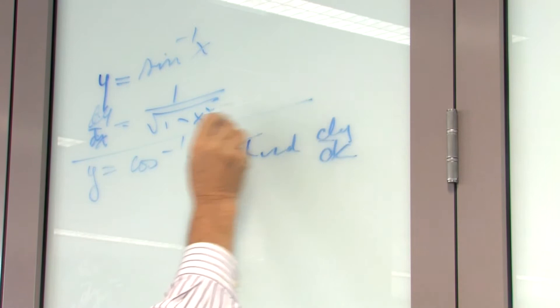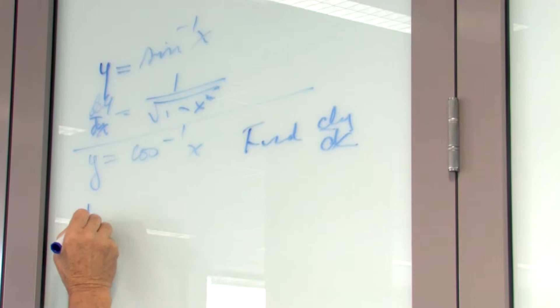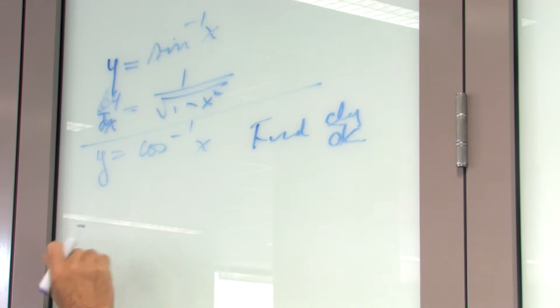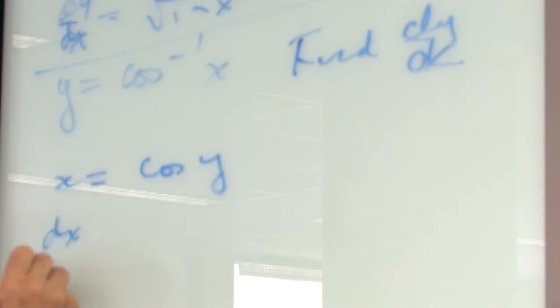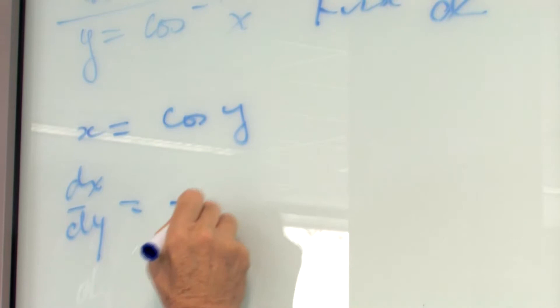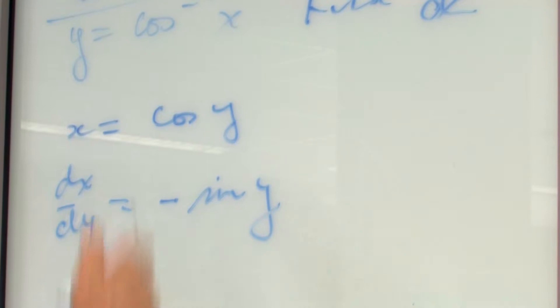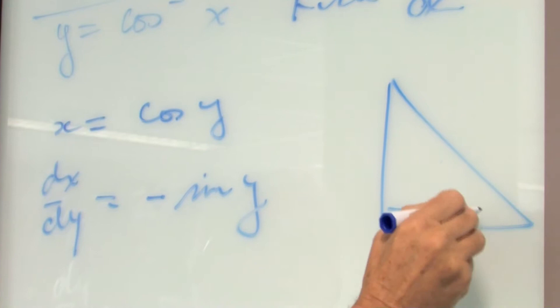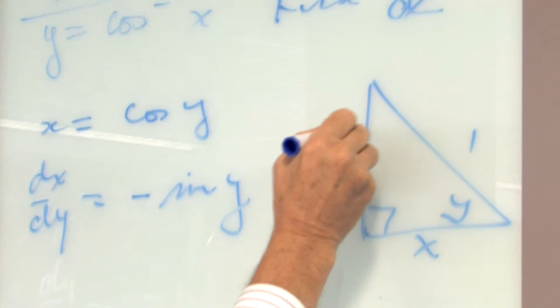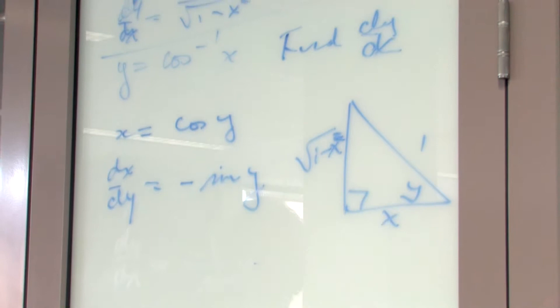Have a look at this one. If you differentiate here, we want to find the derivative of this part. We use x equals cos(y), differentiate both sides with respect to y. Now, we know that x equals cos(y). If we draw a right angle triangle, y is the angle, the hypotenuse is 1, and the adjacent is x, so the opposite side is the square root of 1 minus x squared.